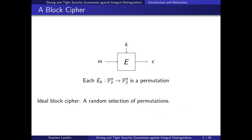The main topic is block ciphers. Block ciphers are one of the main ways to build symmetric encryption. The idea is to generate a family of permutations such that to compute the encryption of a plaintext M, we choose a key which selects one of these permutations, and the resulting ciphertext C is the image of M through this permutation. An ideal block cipher would be a random selection of permutations, which is quite hard to do, so in practice we try to build block ciphers which approximate this ideal.